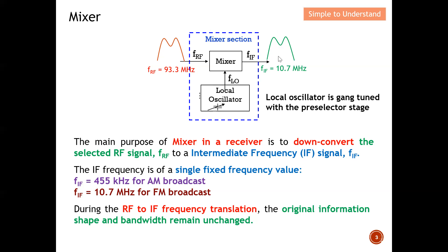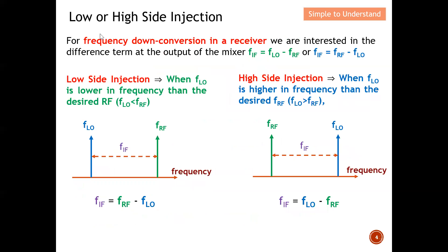This gives you some idea of the key role of a mixer. Now, with a better understanding of the mixer, we can do a quick discussion on low and high side injection. For frequency down-conversion in a receiver, we are interested in the different terms at the output of the mixer — either one of two terms, not both, and this is where low side injection and high side injection come in.